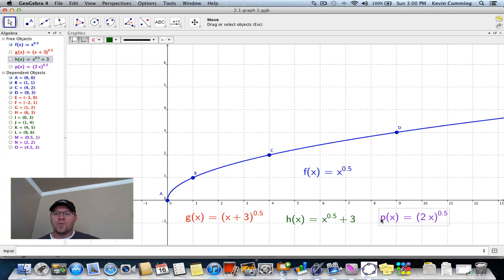And finally, the purple function, P(x), is 2x to the power of 0.5. Now, hopefully you remember that would be a horizontal stretch of a factor of a half. Remember, anything inside that bracket always kind of behaves opposite of what you would think. So all these points A, B, C, and D should all be changed by a factor of a half.